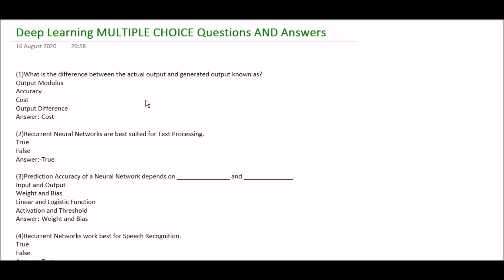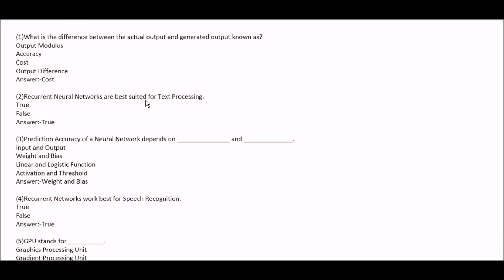Your first question is: what is the difference between the actual output and generated output known as? Option A: output modulus. Option B: accuracy. Option C: cost. Option D: output differences. The right answer is option C, cost.